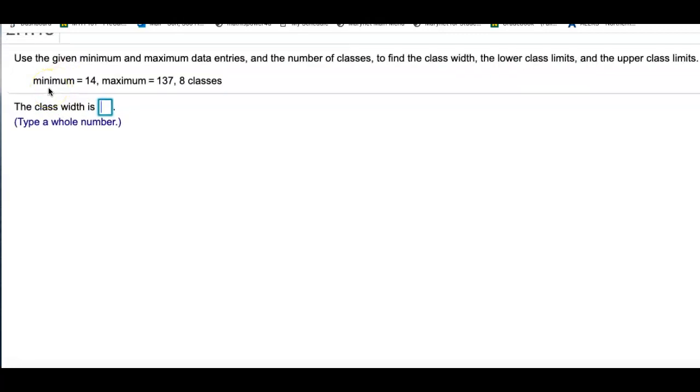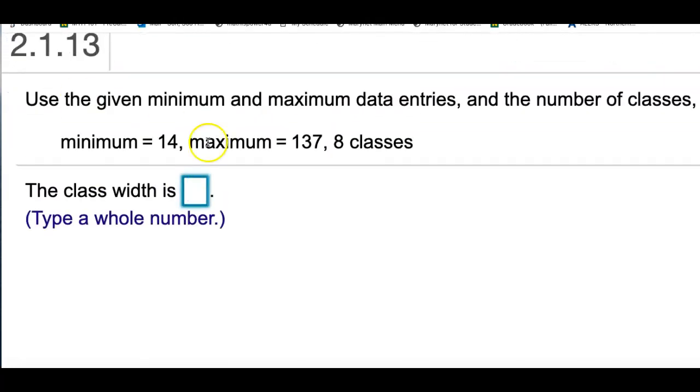The minimum is 14 and the maximum is 137. They want you to create 8 different classes. First thing you're going to do is find the range.